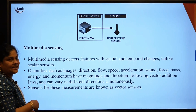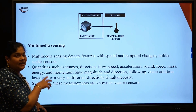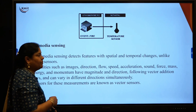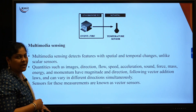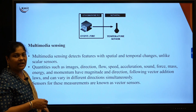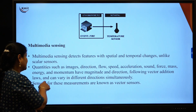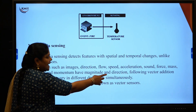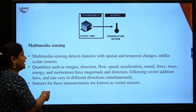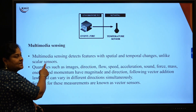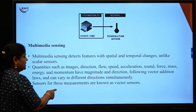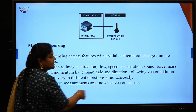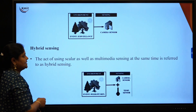The next type is multimedia sensing. Multimedia sensing detects both spatial and temporal changes in the environment — that means it considers magnitude as well as direction. Quantities such as images, direction, flow, speed, and acceleration can be sensed by multimedia sensors. The sensing measurements for multimedia sensors are called vector sensors.